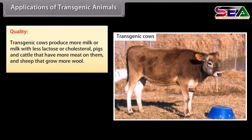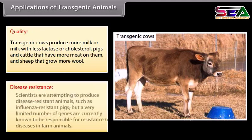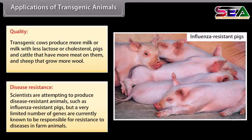Quality: transgenic cows produce more milk, or milk with less lactose or cholesterol; pigs and cattle that have more meat on them; and sheep that grow more wool. Disease resistance: scientists are attempting to produce disease-resistant animals such as influenza-resistant pigs, but a very limited number of genes are currently known to be responsible for resistance to diseases in farm animals.